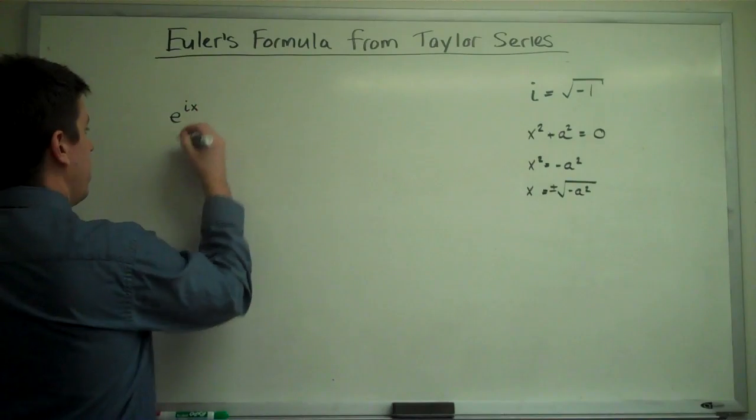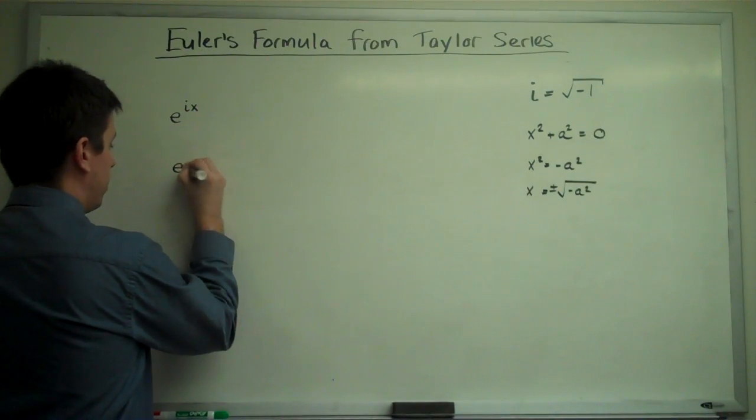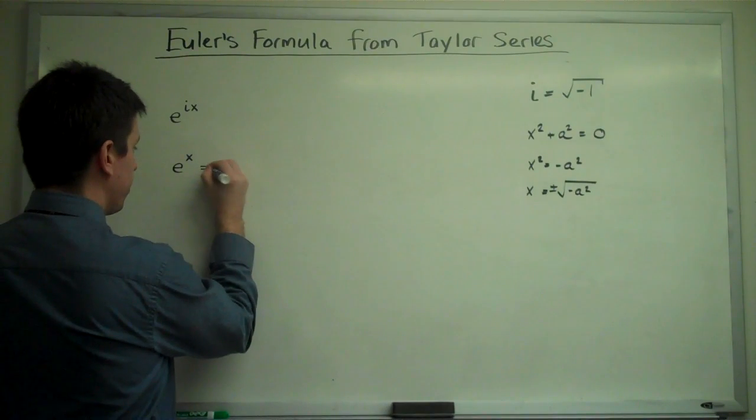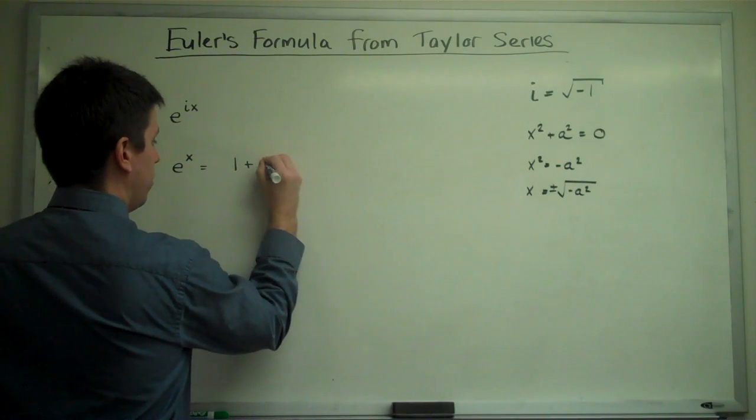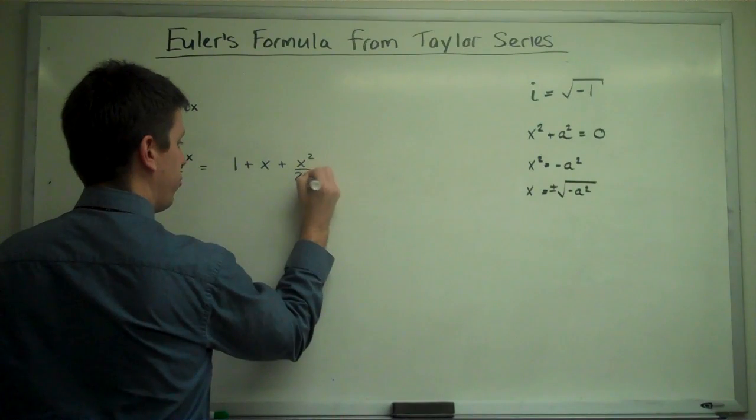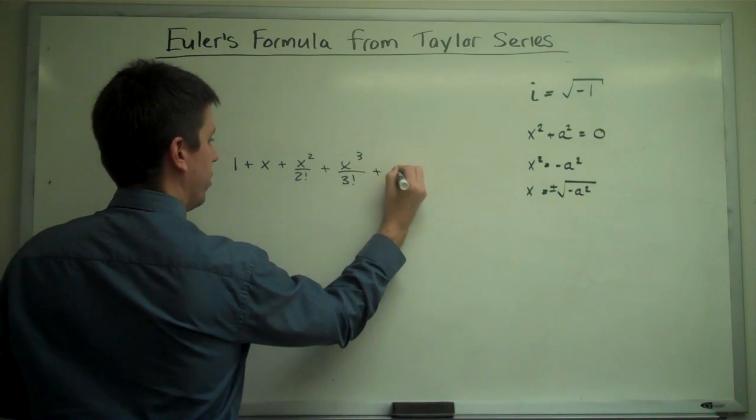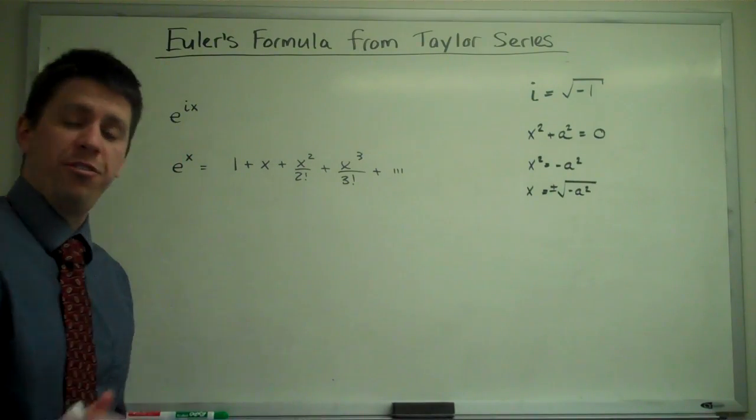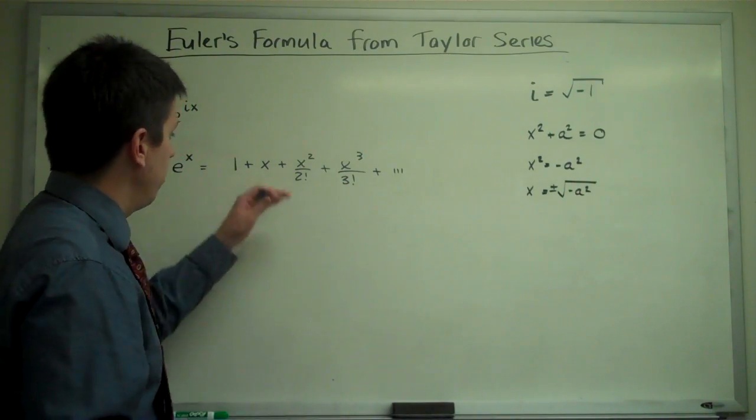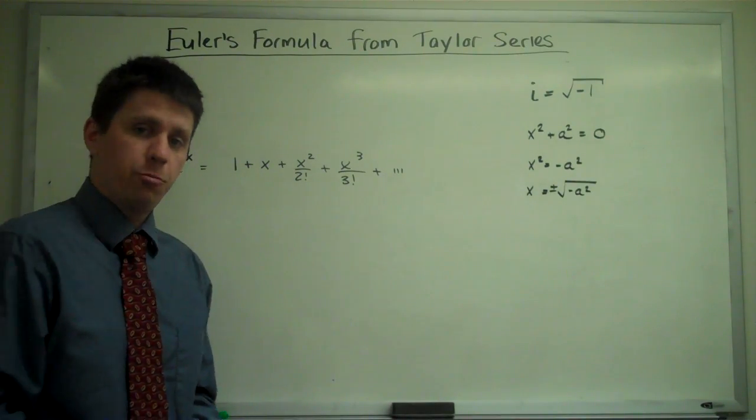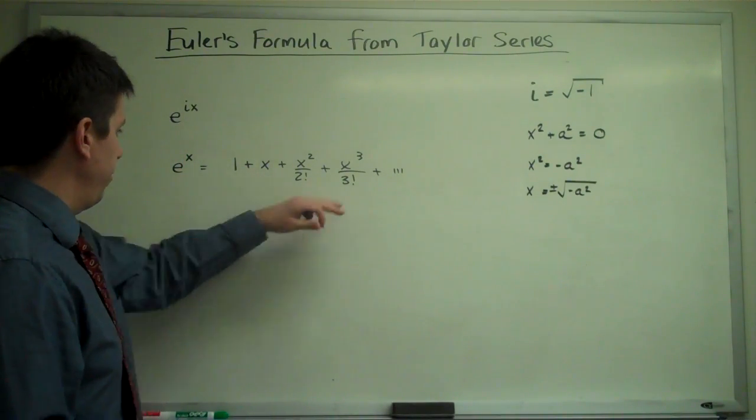So remember that for real arguments, e to the x, we have the Taylor series: 1 plus x plus x squared over 2 factorial plus x cubed over 3 factorial and so on. The infinite series of terms in this Taylor series converges for all values of x, which is good. And this is the Taylor series.